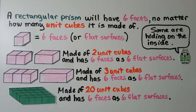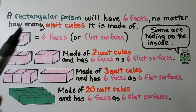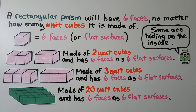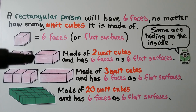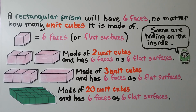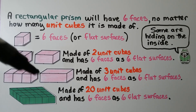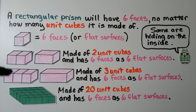A rectangular prism will have six faces no matter how many unit cubes it is made of. One unit cube has six flat surfaces — one on top, one on the bottom, and four going around the sides. Two unit cubes also has six faces. Three unit cubes also has six faces — one on top, one on the bottom, and four going around — because we don't count the faces that are on the inside next to each other.